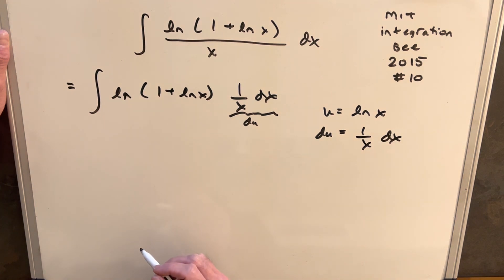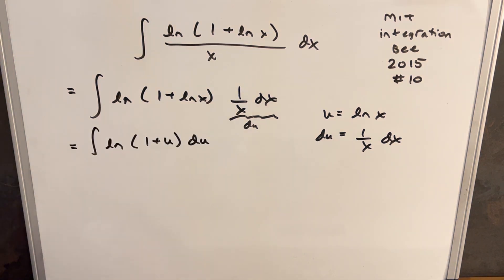And then we can substitute and see what happens. And here we've got our simplified integral. It's still not entirely clear what we should do except for the fact that I know we have something with just an ln. We usually want to do integration by parts.